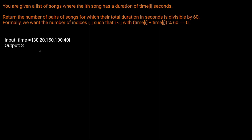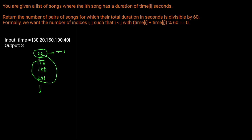For example, if a song's length is 60 directly, then we can pair it with any other song that is also directly divisible by 60 — like 120, 180, 240, and so on. So we keep track of how many songs are already divisible by 60, and we can pair each one with the others.